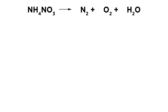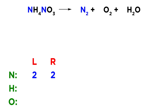One more: NH4NO3 yields N2 plus O2 plus H2O. We make our table with N, H, and O. For nitrogen, we have 2 on the left and 2 on the right. For hydrogen, we have 4 on the left and 2 on the right. For oxygen, we have 3 on the left and 3 on the right.